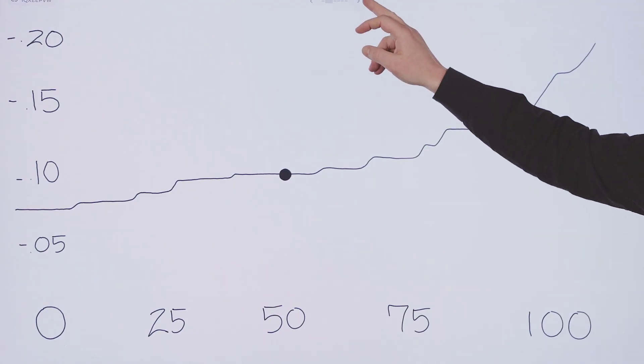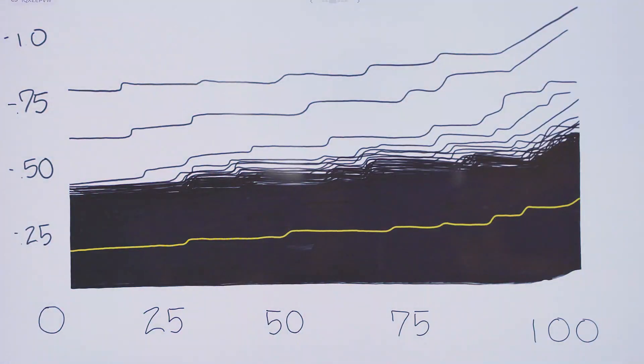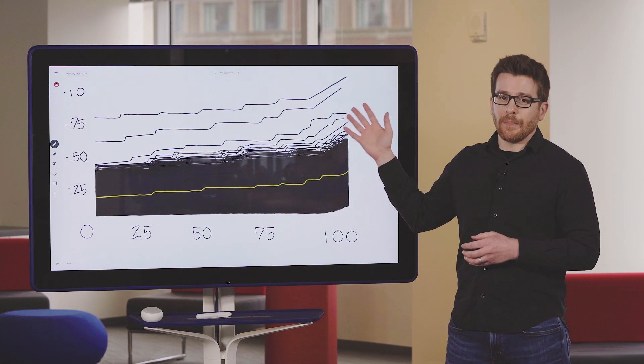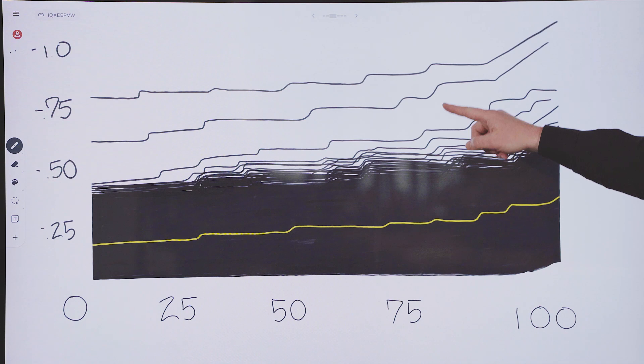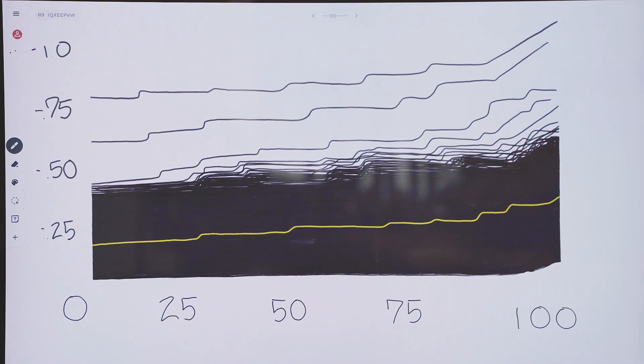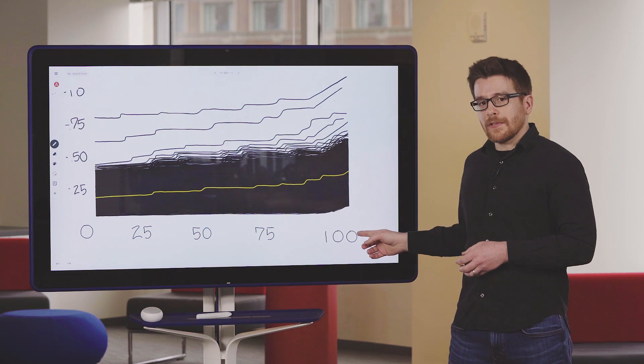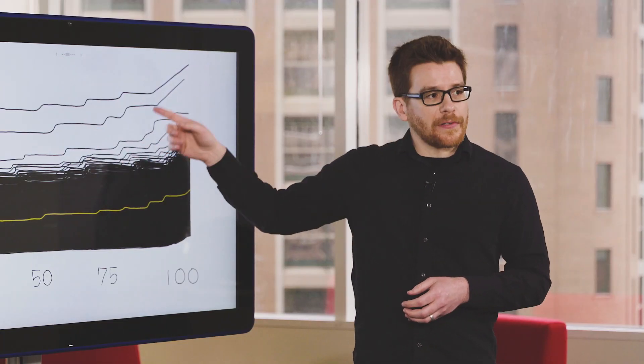So in that previous graph we were looking at that for a single loan. But in DataRobot, the feature effects calculates this for a huge sample. Each one of these dark lines here is a loan, and you can see that the effect of dialing up the credit utilization is roughly similar across all of them.